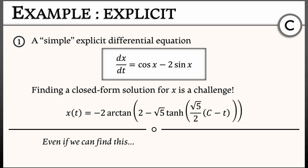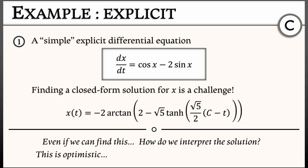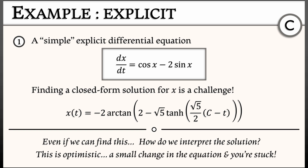But even if we can find this, what does it mean? How do we interpret that solution? What does that constant c really represent? What does this have to do with an initial condition? What happens as t goes to infinity — does this have any sort of limit? That's not clear. And even this is really optimistic. A small change in that differential equation, and forget about it — you're stuck. There's no way you're going to get that exact quantitative solution.